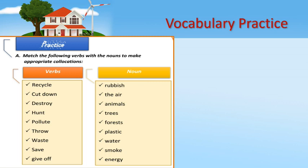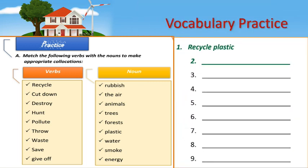Now we will go through two exercises studying vocabulary items related to the topic of environment and ecology. The first exercise is about making collocations. The question says: match the following verbs with the nouns to make appropriate collocations. The first column has a list of verbs to be matched with nouns in the second column. For example, the verb 'to recycle' matched with the word 'plastic' gives the collocation 'recycle plastic'. Now you can pause the video, think of and copy answers for the exercise, and then compare with the key answers.